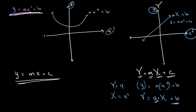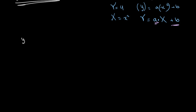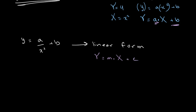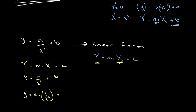By changing our axes from Y versus x to Y versus x squared, we were able to represent our graph in linear form. Let's look at another example: Y is equal to a over x squared plus B, and we want to convert this into linear form — that is, express it as capital Y equals M times capital X plus C.